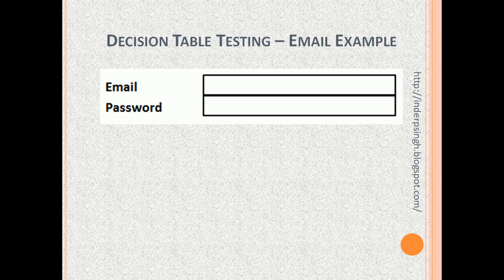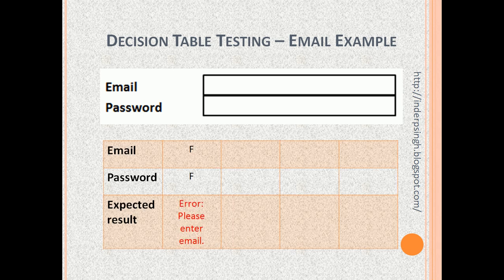All of us use email applications. When we try to open our email, there are two things we have to specify: the email and the password. So let us see how we can build a Decision Table for testing email and password. A Decision Table contains all possible conditions and the corresponding actions. Here, there are two conditions: email and password. The email value can be false or true, meaning email is specified or not specified. Similarly, password can be false or true. One combination is we don't give the email and we don't give the password — both are false — so the system gives an error: please enter the email.